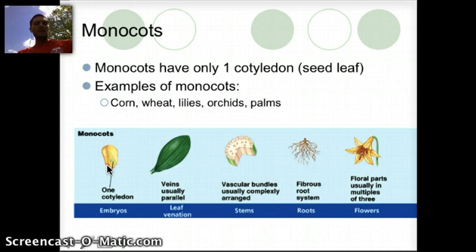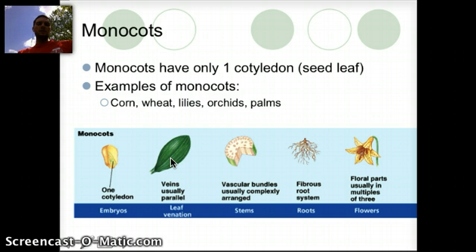Their veins are usually parallel in arrangement. They have vascular bundle roots. In their stems they have a fibrous root system, and their floral parts usually are in multiples of three, which is a very distinguishing feature — either three leaves or multiples of three.